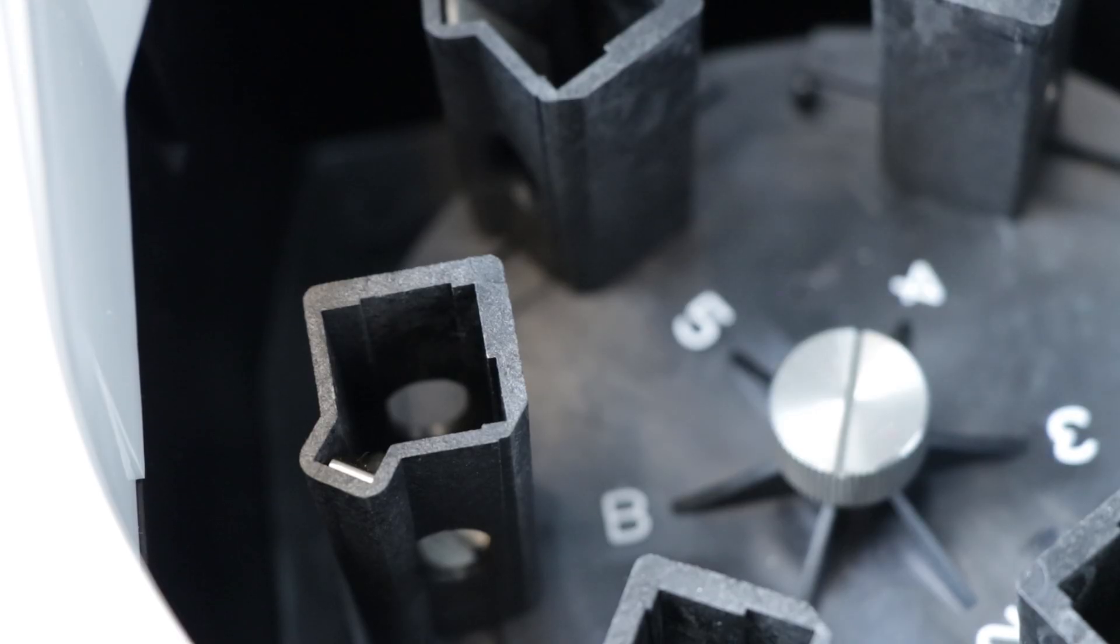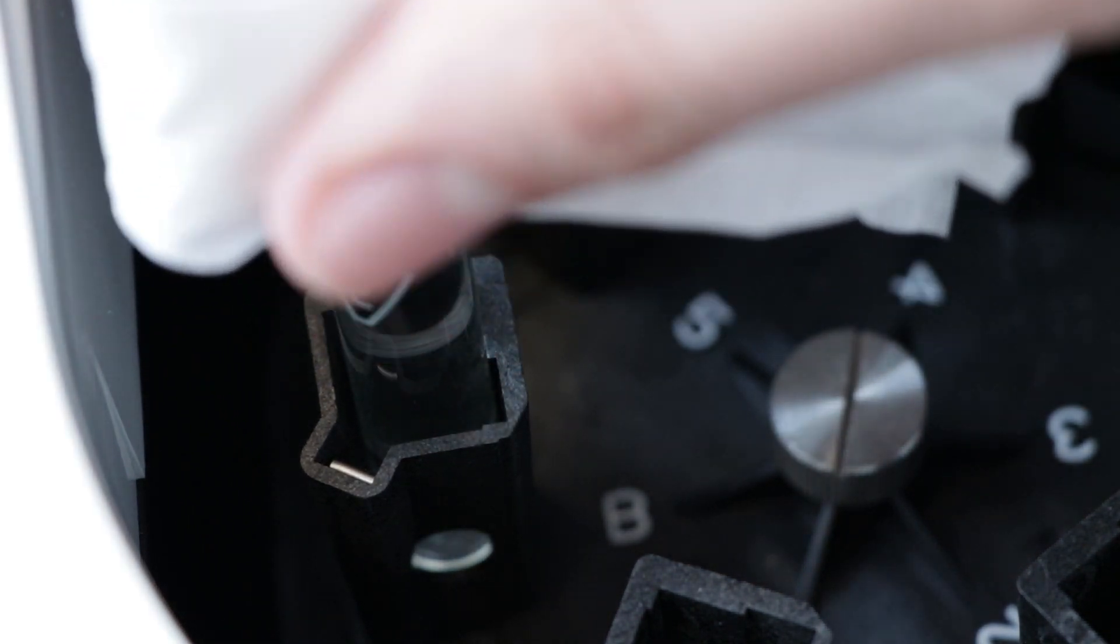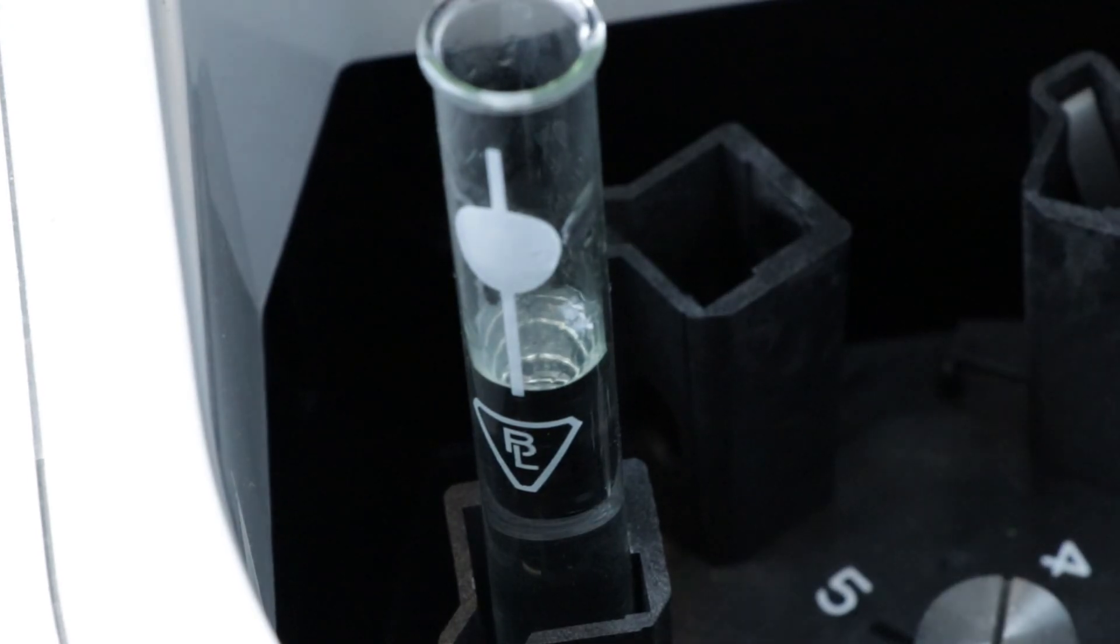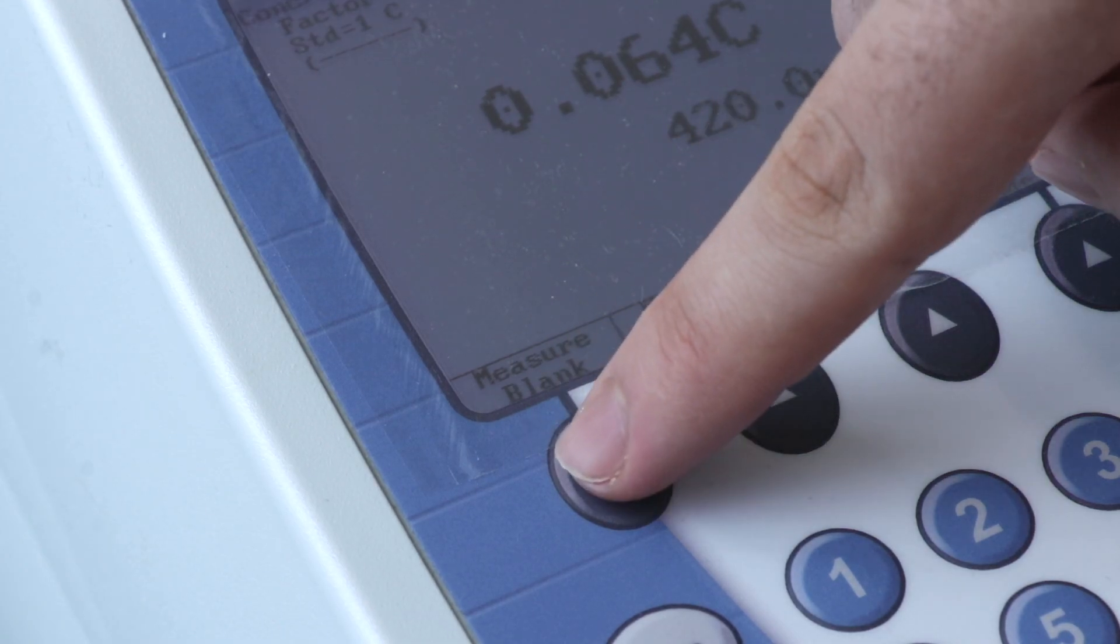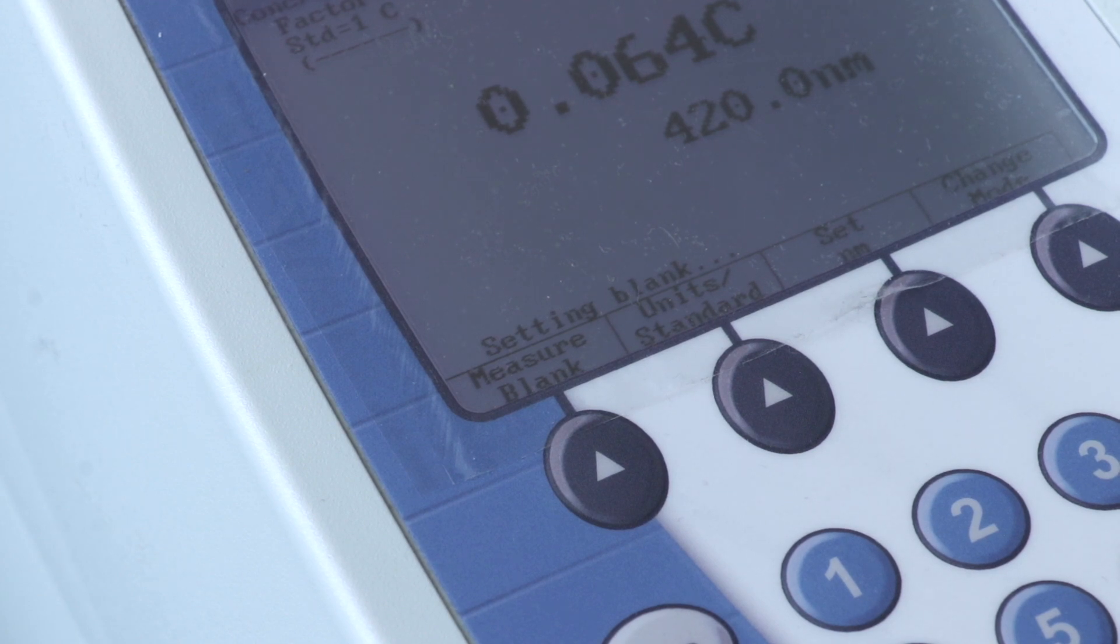To calibrate the spectrophotometer, insert the blank into position B. Wipe the cuvette with a Kimwipe to ensure that there is no liquid or fingerprints on the outside that may influence the absorbance. Then, press the measure blank button for calibration. This will set the blank at 0% absorbance and 100% transmittance.